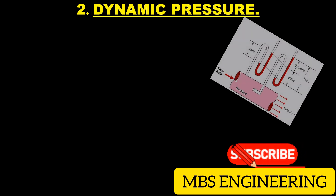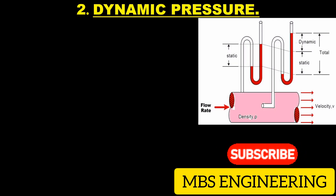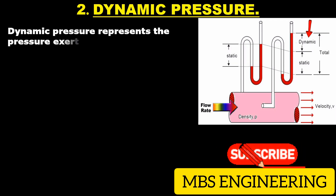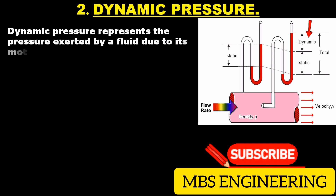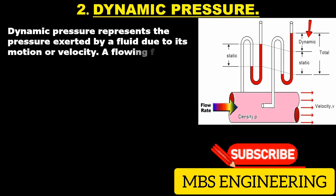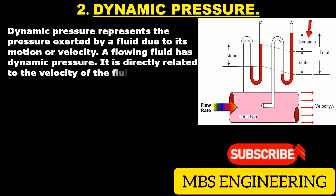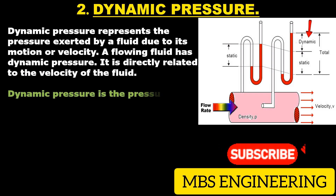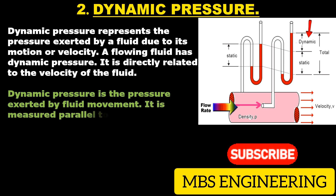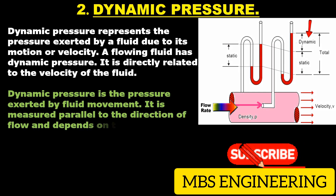We will learn and understand dynamic pressure. Dynamic pressure represents the pressure exerted by a fluid due to its motion or velocity. A flowing fluid has dynamic pressure, and it is directly related to the velocity of the fluid. Dynamic pressure is measured parallel to the direction of flow and depends on the velocity of the fluid.